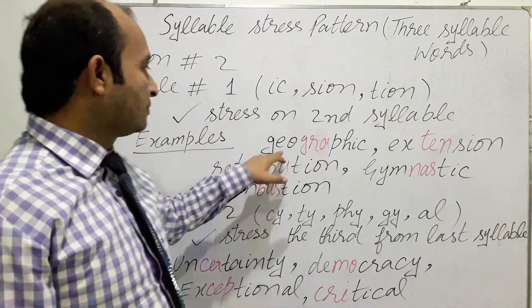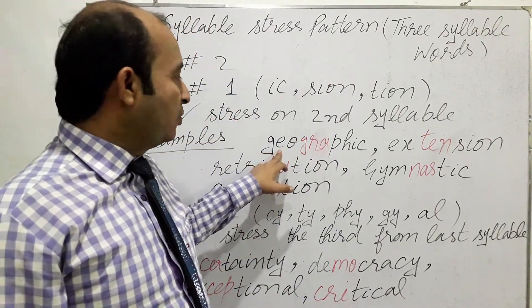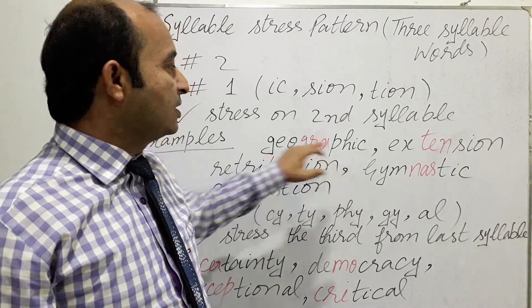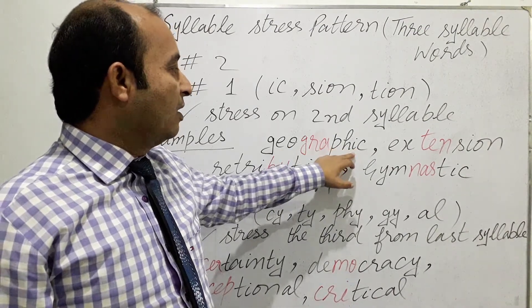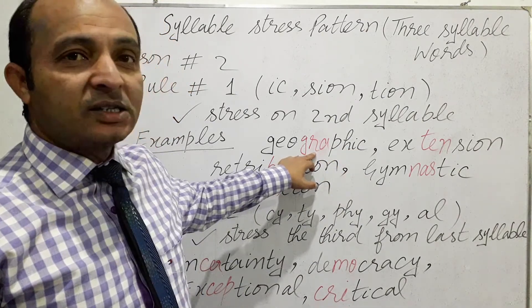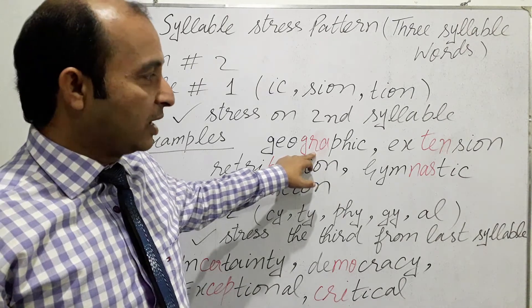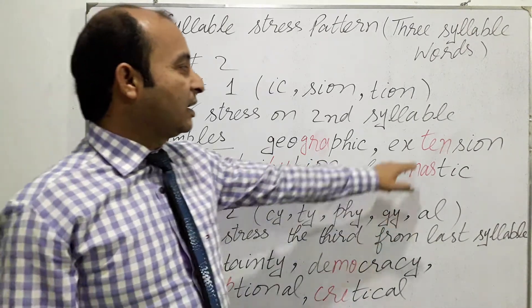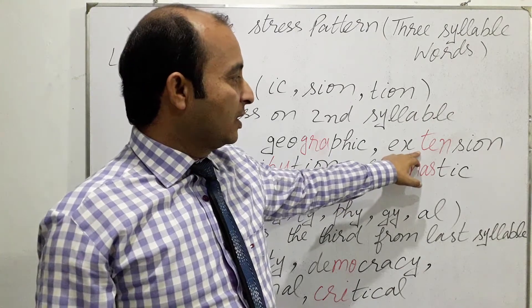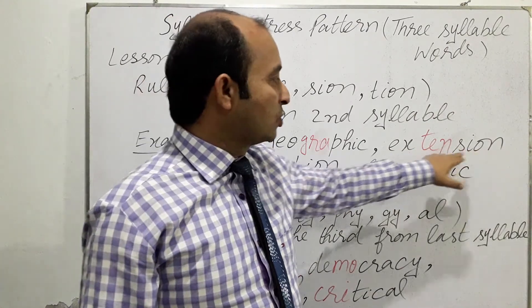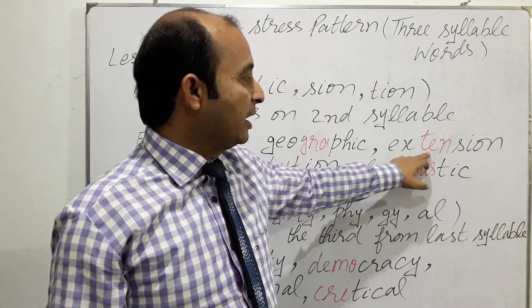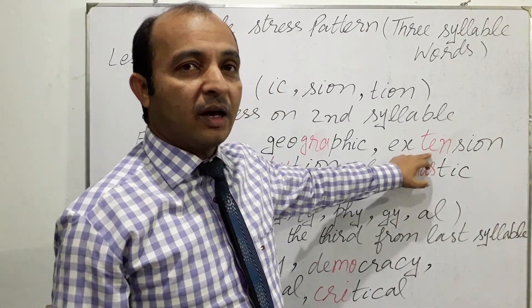Look at these words. The first word we have is 'geographic'. This is a three syllable word and we are stressing on the second syllable — the second last syllable, you may say. Similarly, we have the next word 'extension'. We are stressing on the second last syllable: 'ten' — ex-TEN-sion.